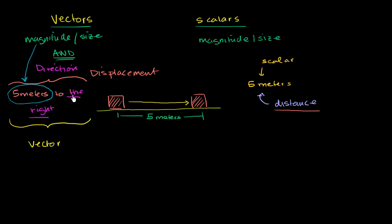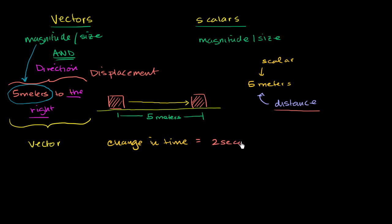Let's talk about the speed or velocity of something. Let's say that the five meters was traveled and the change in time was two seconds — when the block started moving my stopwatch said zero, and when it got to this position my stopwatch said two seconds. So the change in time or duration we're dealing with is two seconds.